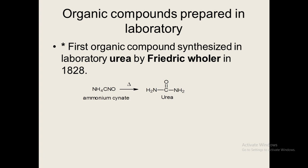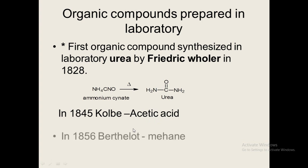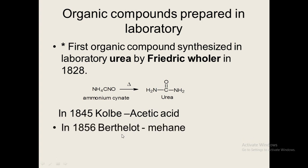This discovery brought a revolution in the field of organic chemistry. The second organic compound was discovered in 1845 by scientist Kolbe — that was acetic acid. Then in 1856, scientist Berthelot prepared the organic compound methane in the laboratory. Later on, all organic compounds were prepared in the laboratory.